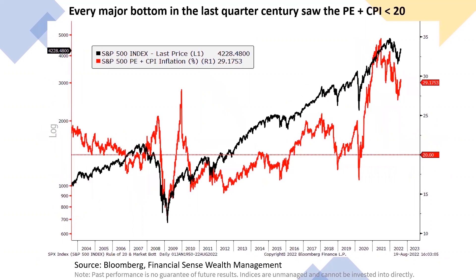Looking at the last quarter century, the Great Financial Crisis bottom occurred well below 20. The bottoms in 2010 and 2011 were also still below the Rule of 20. The 2015-16 corrective period — those bottoms were also below the Rule of 20. The Powell tightening bear market of 2018 bottomed on December 26th, 2018, well below that Rule of 20 threshold. And even the COVID bear market went well below that 20 threshold.